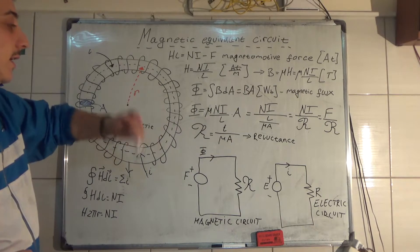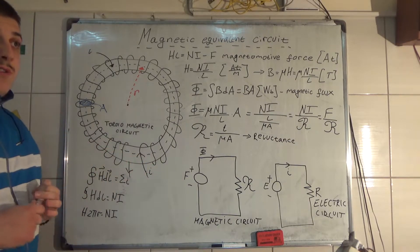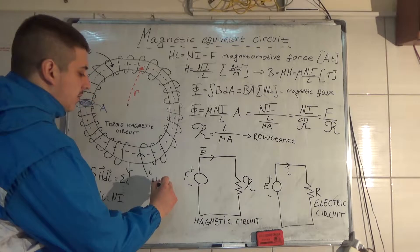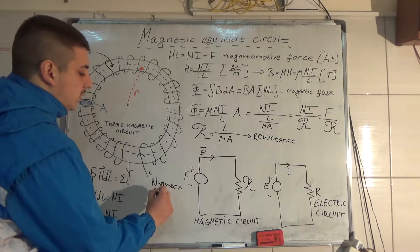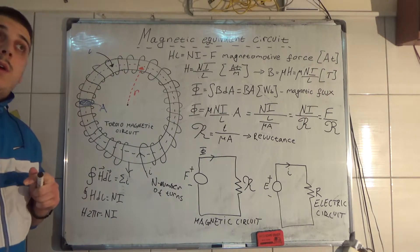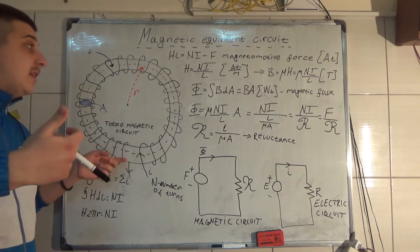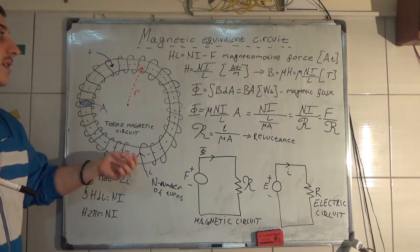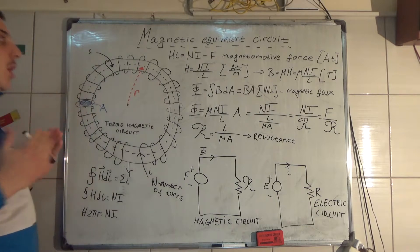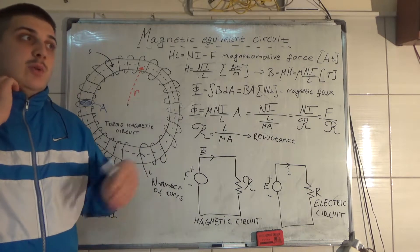For example, we wind this toroid with conductors, so we will have a coil with N number of turns. Now we want to calculate or measure what is the magnetic field intensity in this toroid — we will measure it from here to here. We will do it with Ampere's circuit law, which I showed in my previous video.